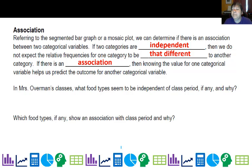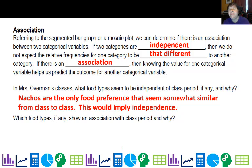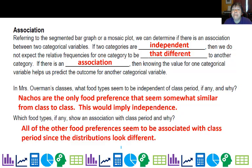So are the food types independent of class period? Looking at the graphs, nachos seemed to be the most consistent — the bar height was kind of the same across periods. So nachos seemed to be kind of independent among class periods. But every other food type definitely changed with class period — I couldn't use first period to predict food preferences for third period. I could have used the nacho preference to roughly predict. And remember, in statistics, we're not exact — it's a beautiful thing.